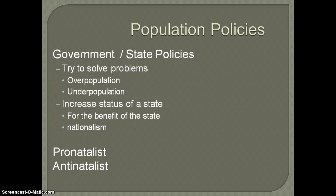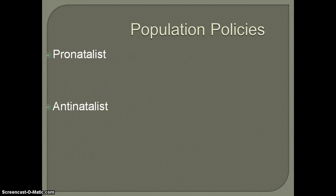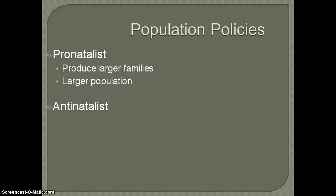When we talk about population policies, there are two types. You can see them at the bottom — they are called pronatalist and antinatalist. Think about your prefixes from literature class. Pronatalist simply refers to policies that encourage people to have more children so they would have larger families, in order to increase the population. Antinatalist is the exact opposite — for some reason they're trying to curb population growth, so they encourage or in some cases force people to have fewer children.